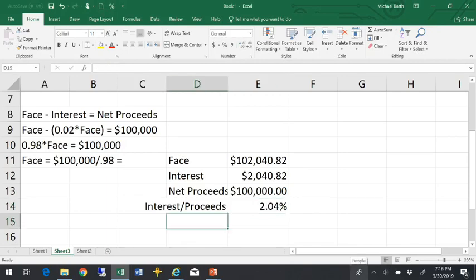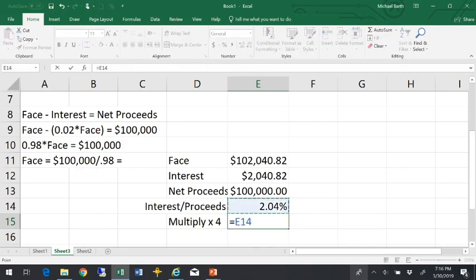And then if we convert that into an annual rate, because there's four quarters in a year, so the rate's actually a little bit higher, 8.16%.